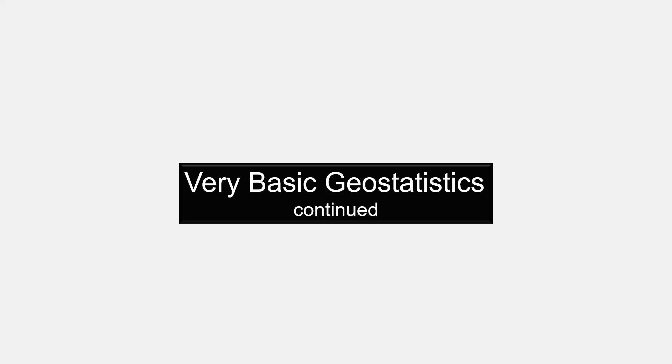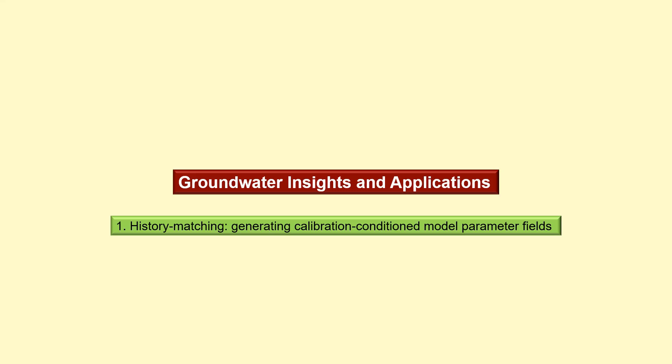This is the second of our two-part series on very basic geostatistics. In this second video, I want to look at some of the insights that geostatistics gives us into parametrization of a groundwater model and how we can use that parametrization to explore parameter and predictive uncertainty. We finish off by looking at some of the more modern realizations of geostatistics. So let's start off with some insights for groundwater model parametrization.